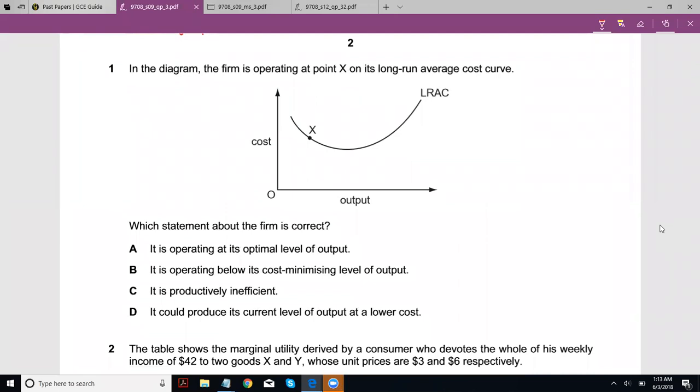Now, what happened was you could clearly eliminate A and D. Most people didn't struggle with that because A, it is operating at its optimal level of output. Well, not really. You don't want to produce something like this so you can make full use of your economies of scale.